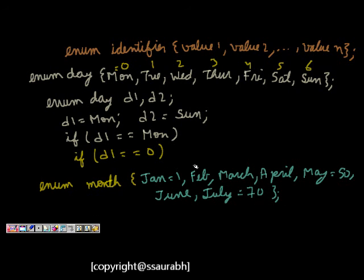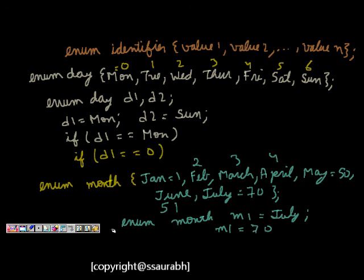It means now January is equal to 1, then February will become 2 by auto-incrementation, 3, 4, May is 50 because of our assignment. June will become 51 and July will be 70. So if enum month m1 is equal to July, it means m1 has value 70. This was about the enum type and we will end our lecture here.